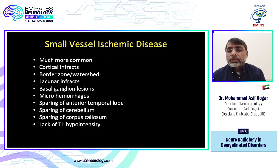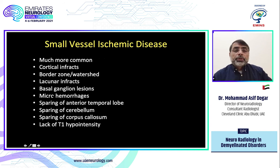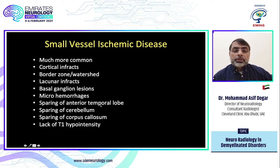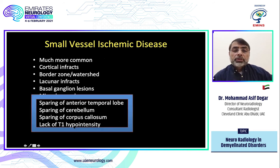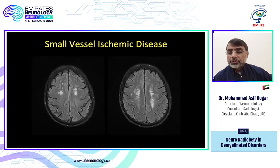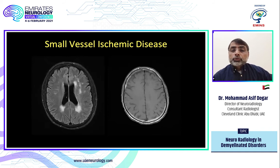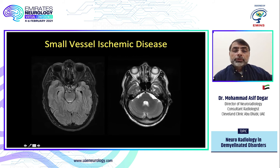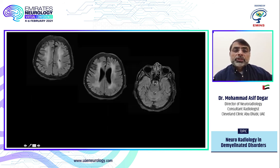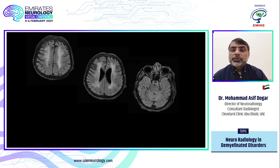White matter lesions are seen every day — most are due to small vessel ischemic disease or migraine. Small vessel ischemic disease can show cortical infarcts, lacunar infarcts, basal ganglia involvement, and microhemorrhages. However, small vessel ischemic disease spares the anterior temporal lobe, cerebellum, and corpus callosum, and usually has no T1 hypointensity unless there are microinfarcts. Here is a case of small vessel disease: some periventricular lesions, no T1 hypointensity, and critically, no lesions in the temporal horn — more than 90% of small vessel ischemic disease cases spare the temporal horn.